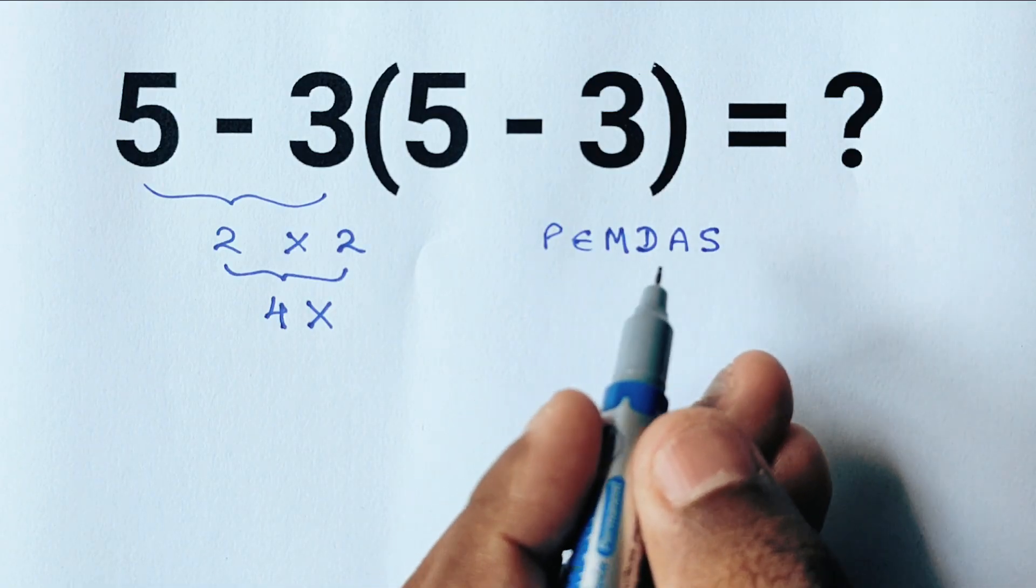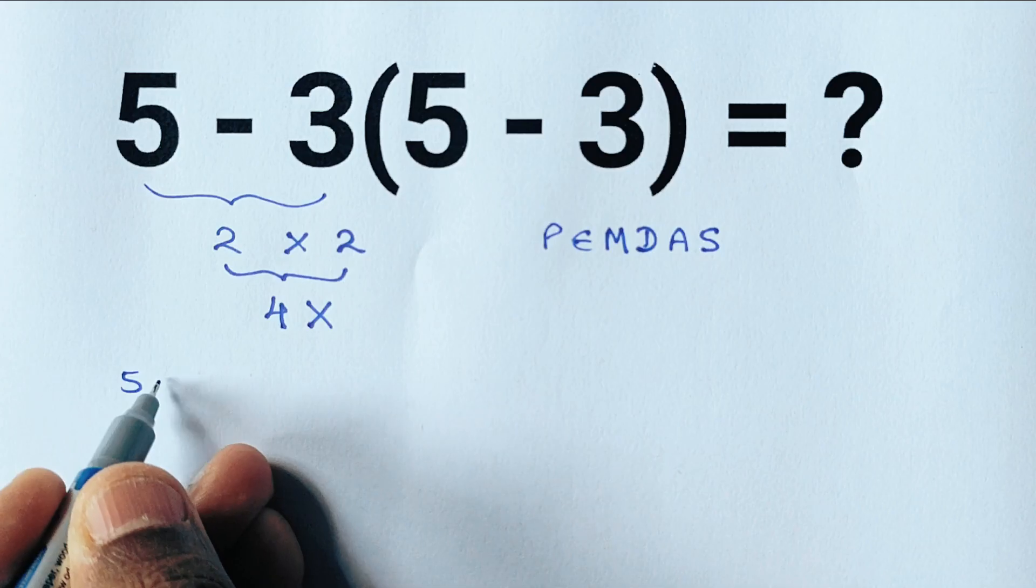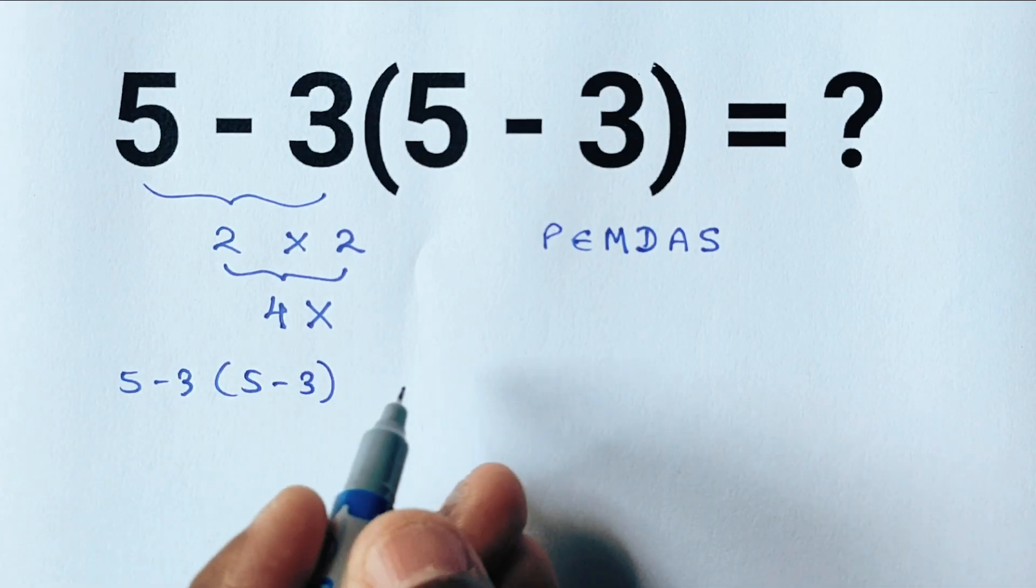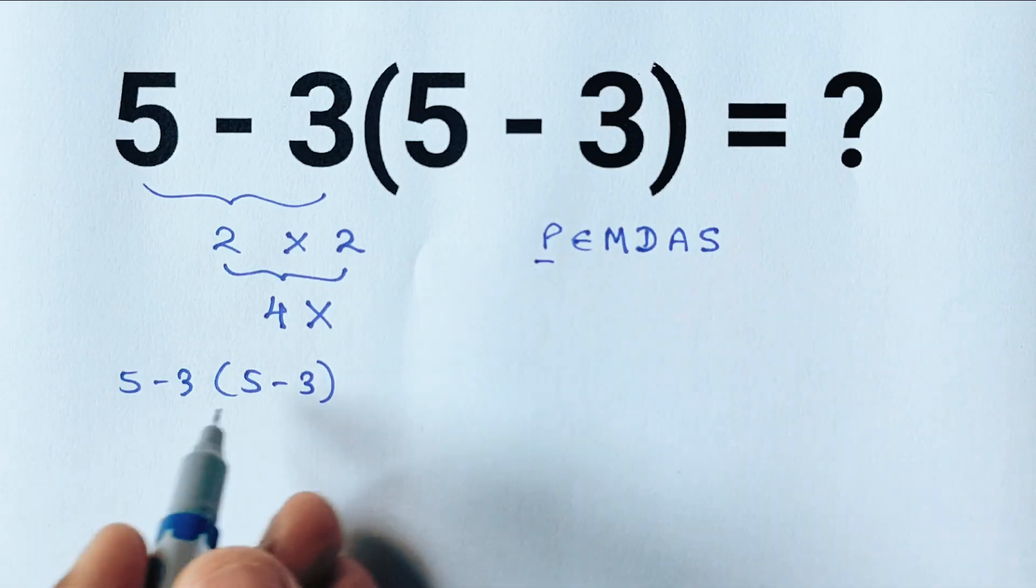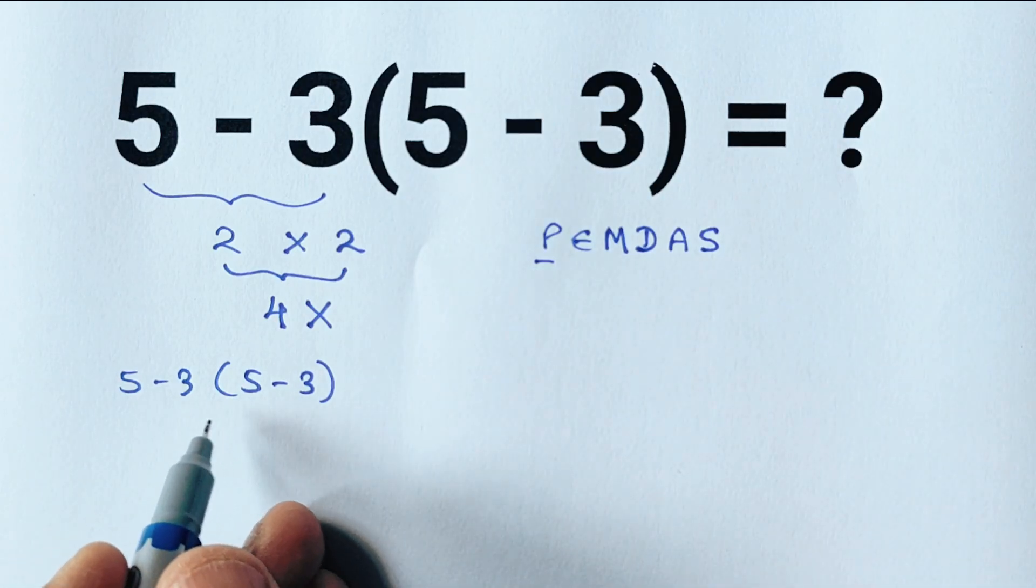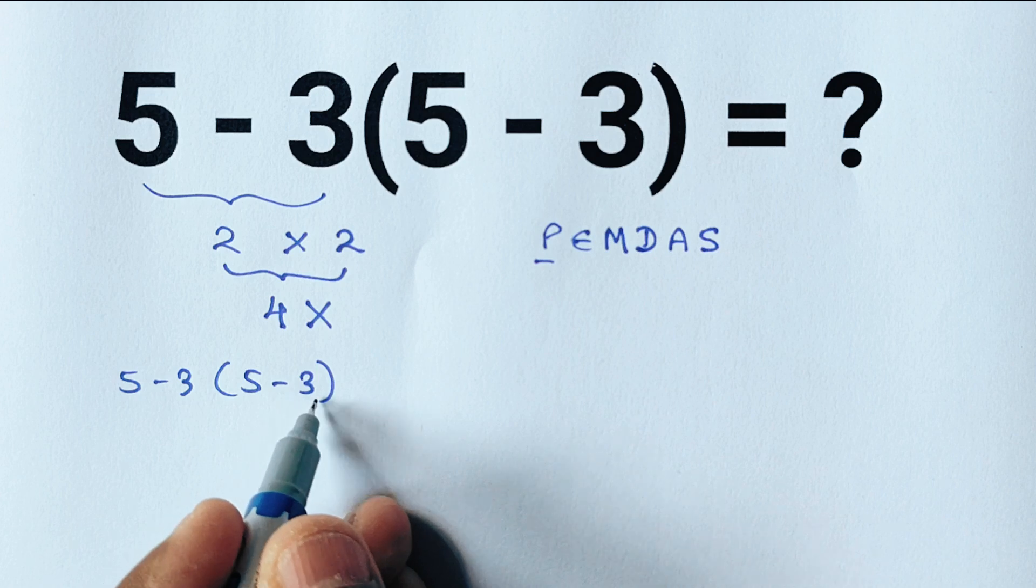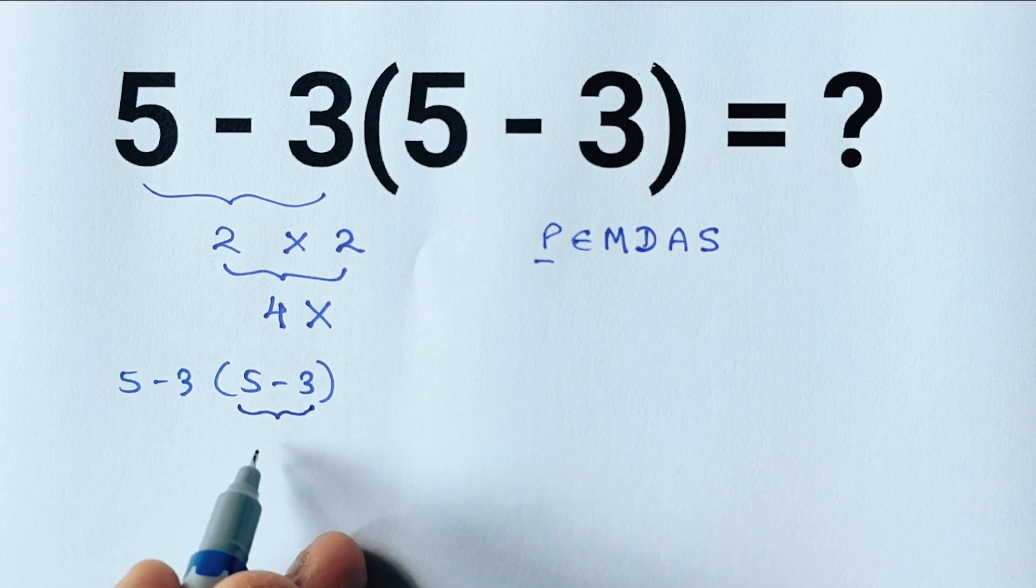Now let's apply PEMDAS to this expression 5 minus 3 parenthesis 5 minus 3. First we look for parenthesis and here we have one. So let's solve what's inside the parenthesis first. We have 5 minus 3 which equals 2.